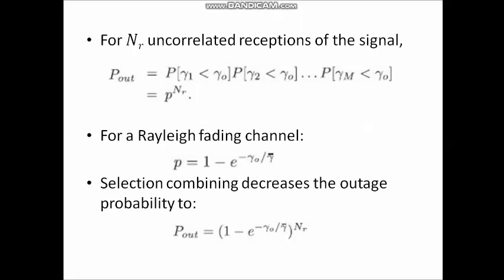Assume we have NR uncorrelated receptions of the signal, meaning NR receive antennas with uncorrelated channels. The outage probability P_out can be written as the product of outage probability of each channel: P_out = P(gamma1 < gamma0) × P(gamma2 < gamma0) × ... × P(gammaNR < gamma0). Therefore, we can write P_out = p^NR.